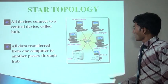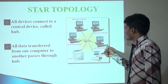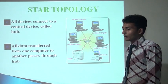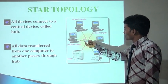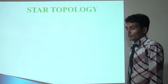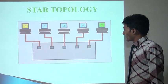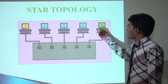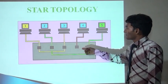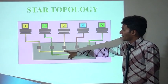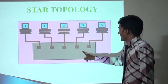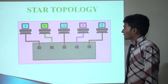In star topology, all computers and devices are connected through a central device called a hub. All data is transmitted through a transmission media. In this figure, multiple computers can share data at the same time — for example, computer one can share data with computer three, and computer two can also share data with computer three simultaneously.